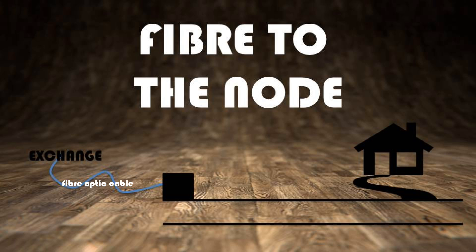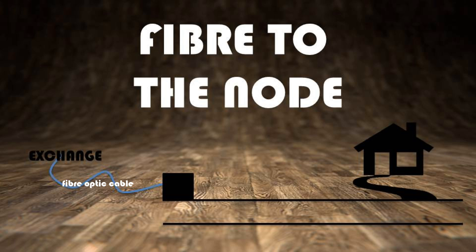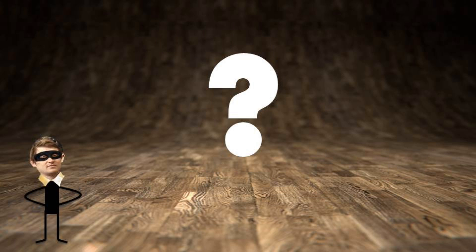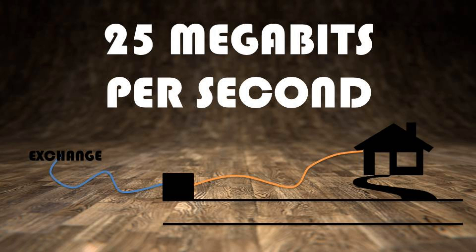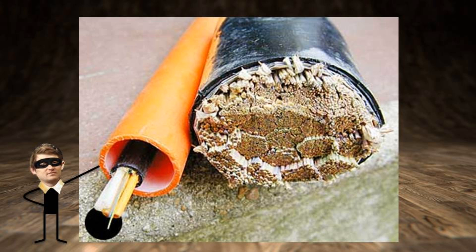FTTN means fiber to the node. The node is basically a junction box in your neighborhood — it serves a few hundred customers within a radius of a few kilometers, and then connects you to the copper cable which reaches your house. Fiber all the way to your house means you could achieve, in theory, at least 100 megabits per second, while fiber to the node means you can reach about 25 megabits per second. That difference is the direct result of the type of cabling used.